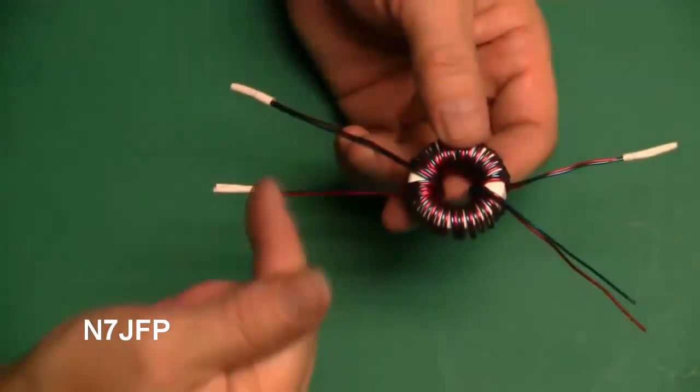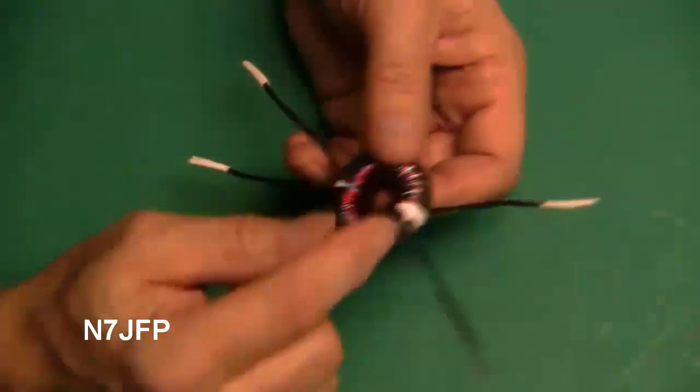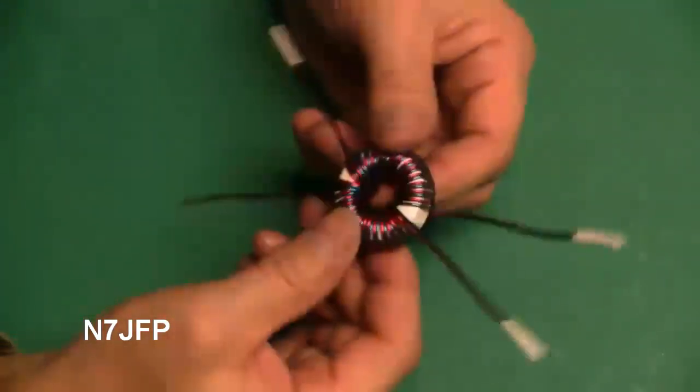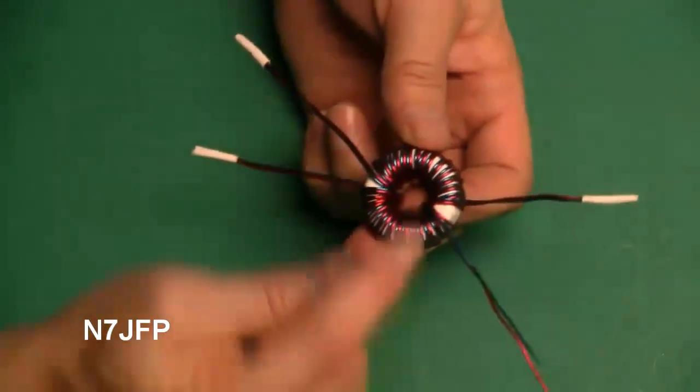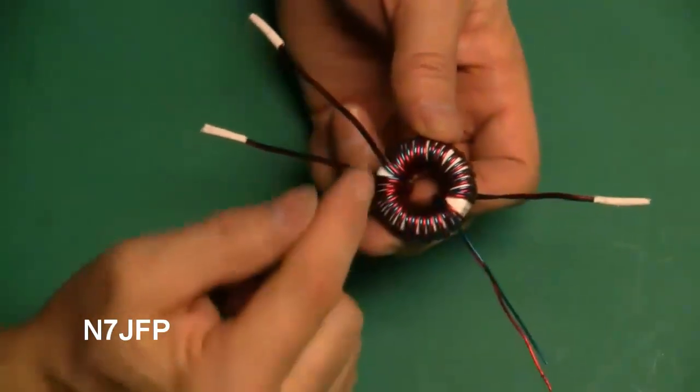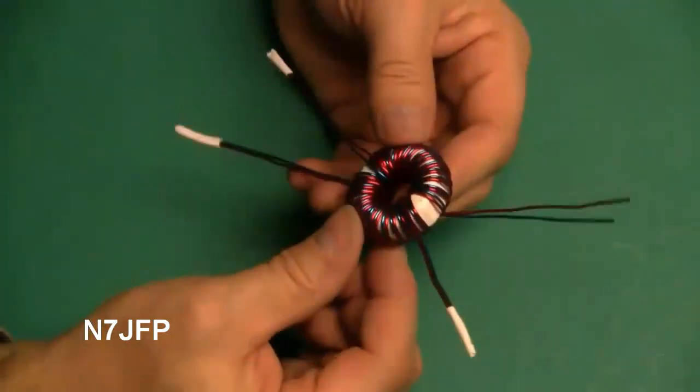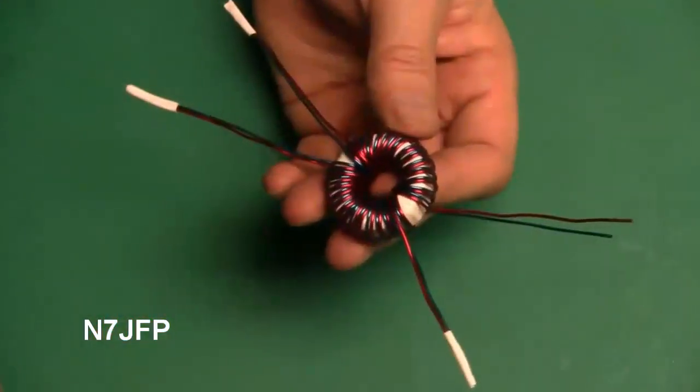Now we just got to trim the leads, get the enamel off, and tie the leads together so it's a one to four current balun. Right now it's just a one to one, two choke type coils on there. That's it.